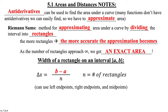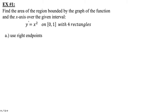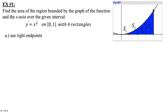Find the area of the region bounded by the graph of the function and the X-axis over the given interval. We're going to start simple: y equals x squared on the closed interval from 0 to 1 with 4 rectangles. Here's my parabola x squared from 0 to 1. We're looking for the area under the curve, breaking this up into 4 sections: S₁, S₂, S₃, S₄.